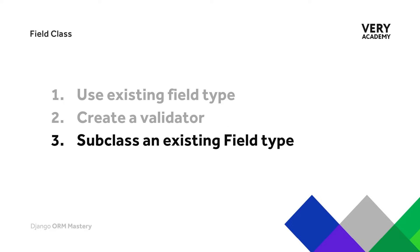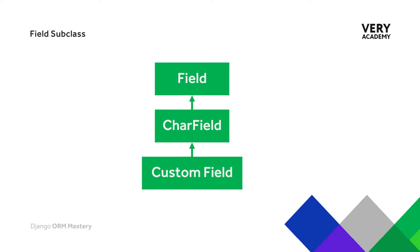In the third approach, we assume there is an existing field type that meets part of our needs, but we want to add some additional attributes or functions. So we can go ahead and subclass an existing field type. What we now have is a new custom field — a class which will inherit all of the attributes, methods, and features from the character field, for example, if we've selected a character field and the field class.